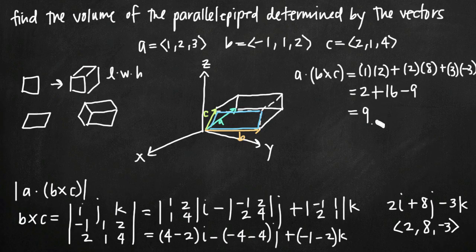Simplifying: 2 + 16 = 18, minus 9 equals 9. This tells us that the volume of our parallelepiped is equal to 9, when that parallelepiped is defined by the vectors a, b, and c.